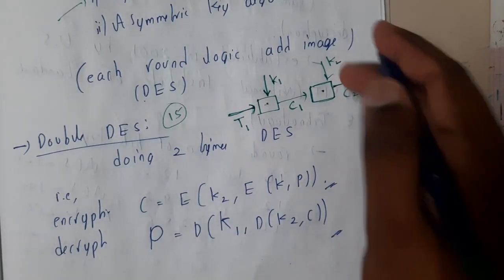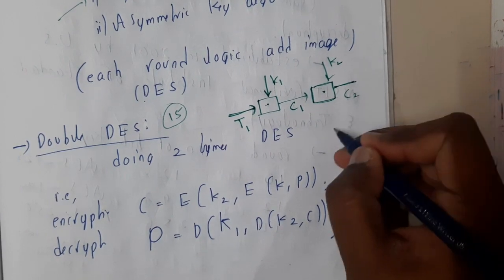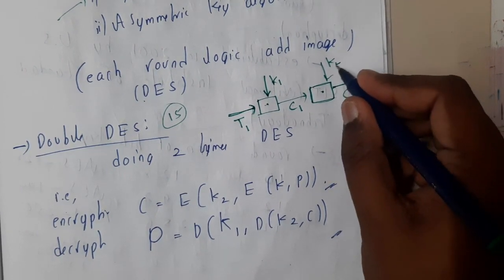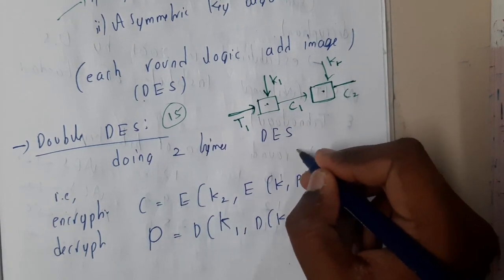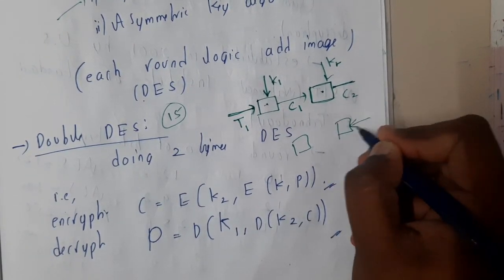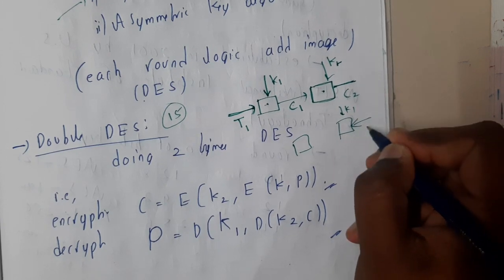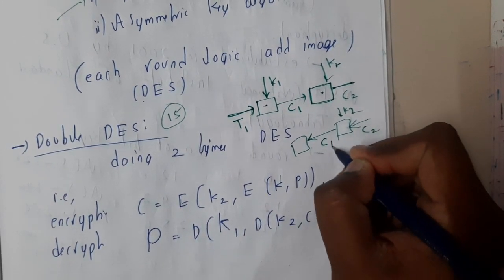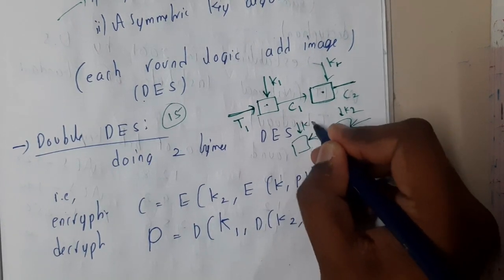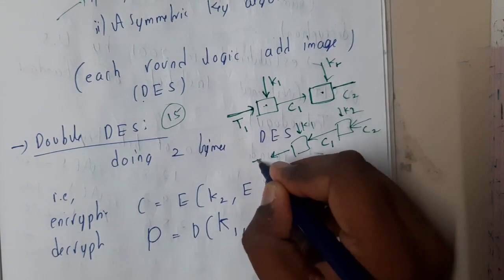On the receiver side, first you will be unlocking this C2 with the help of key 2, K2. The flow will be in the reverse. Just draw the same diagram with reverse arrows. Please don't confuse with them. You will be getting C1, again you will be doing with K1 to get the original text T1.